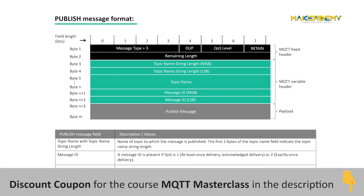The third packet is the PUBLISH packet. The PUBLISH packet is sent by the client to the broker when it wants to publish a message on a topic. The variable header field of the PUBLISH packet will consist of the topic length and the topic name. The payload field will consist of the actual data which is being published.